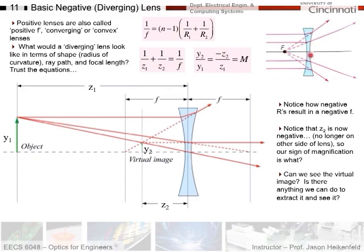And so when we have these types of lenses, we will call them one of three things. We will call them diverging, because the rays diverge. We will call them concave, because the surface is concave. Or we will call them a negative focal length lens as compared to a positive lens which had a positive focal length.